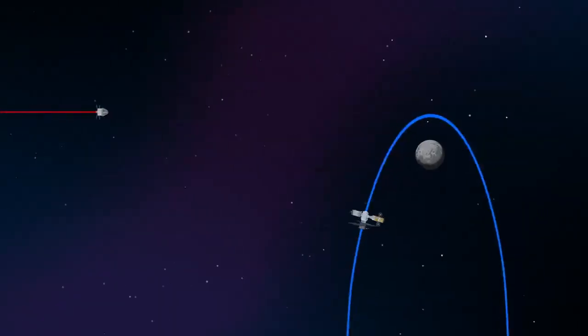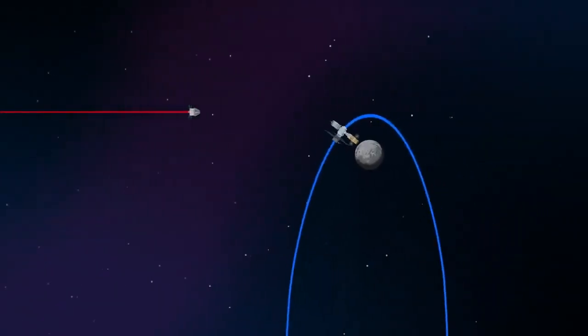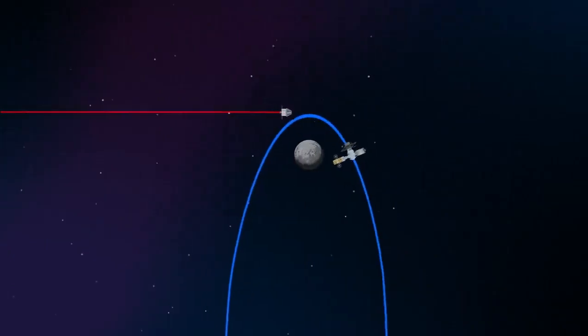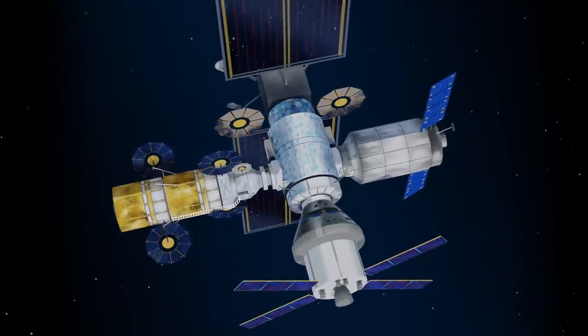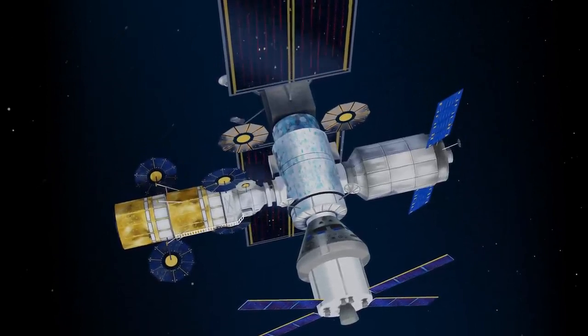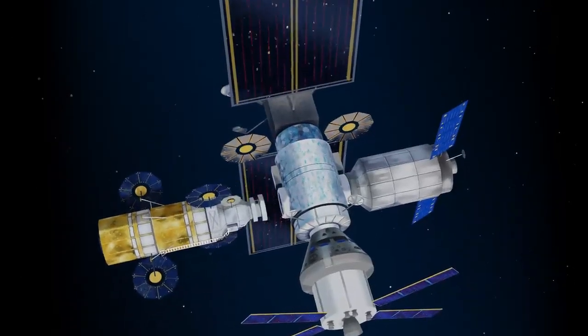Returning to our crew as they approach Gateway, the Orion must match the elliptical orbit of the station in order to successfully dock. Once on board, pre-selected crew members transfer to the lunar lander, while those assigned to Gateway remain on station.